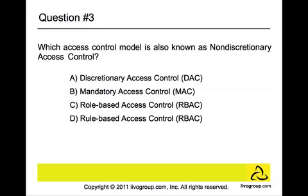Question number three. Which access control model is also known as non-discretionary access control? The answer is C, role-based access control. In this particular access control, access is based on the user's job function within the organization to which the computer systems belong. Permissions are assigned to particular roles in the organization. For example, if you're an accountant in a company, you will be assigned to the accountant role and gain access to all resources permitted for all accountants on the system.